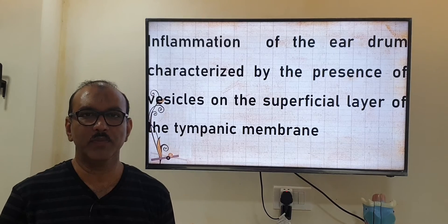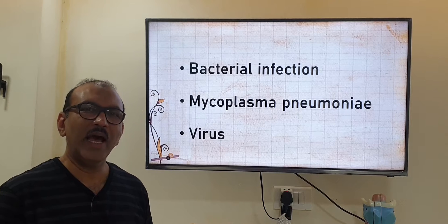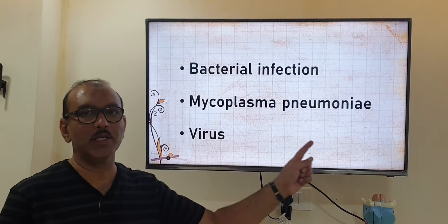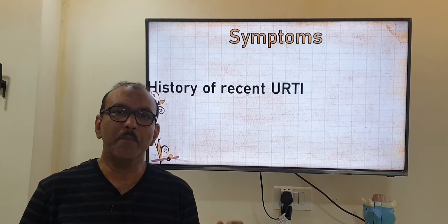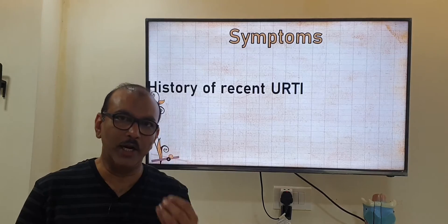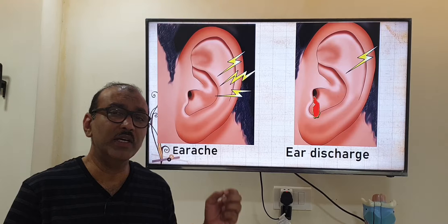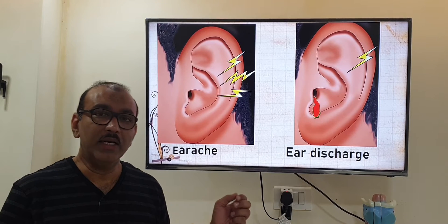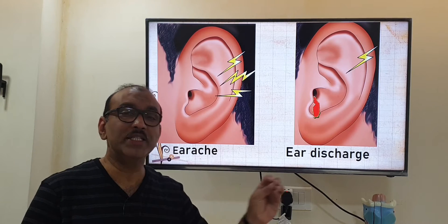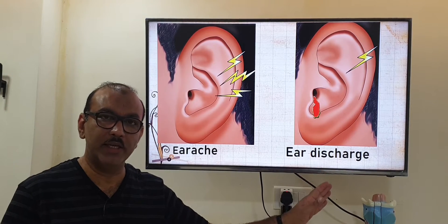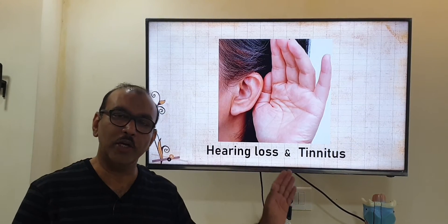Bullous myringitis is usually caused by bacterial or viral infection, and less commonly by Mycoplasma pneumonia. It starts like an upper respiratory infection, with the patient having nasal block and running nose, and then developing severe, unbearable ear pain. Along with that, they may have watery discharge or blood-stained discharge.